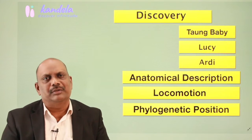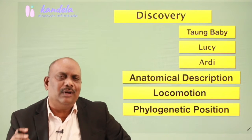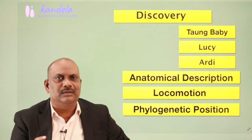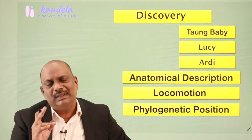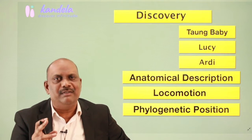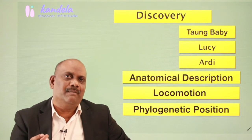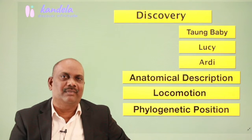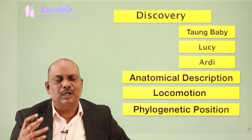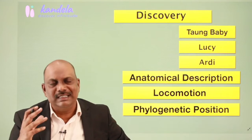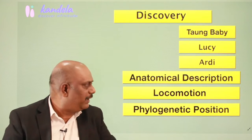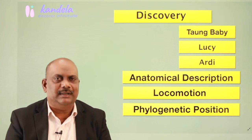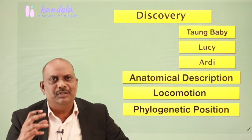We will also discuss locomotion. Although Australopithecus were bipedal and terrestrial, the way in which they walked on the earth was slightly different from the way human beings walk today — we call it a jog-trot-like gait. So we will examine what type of locomotion they had.